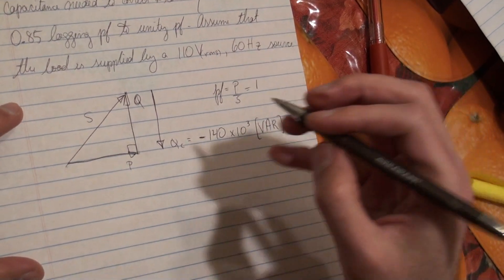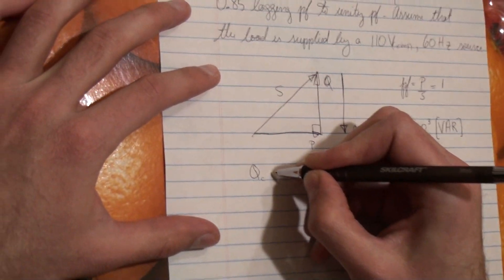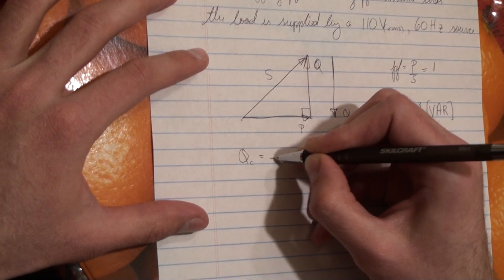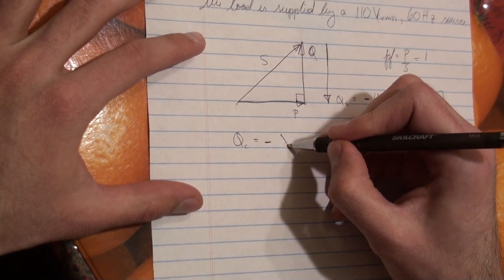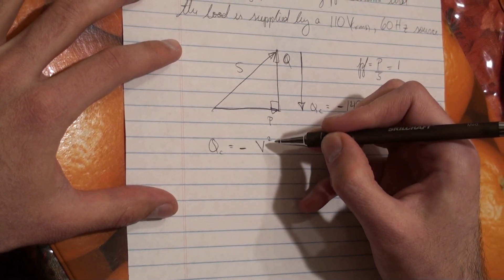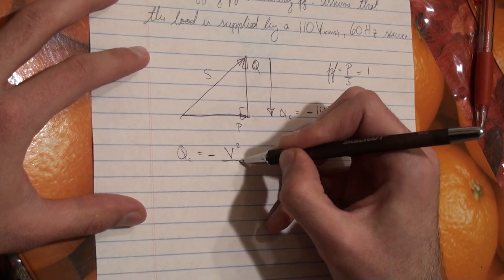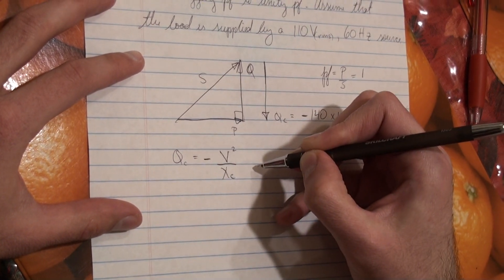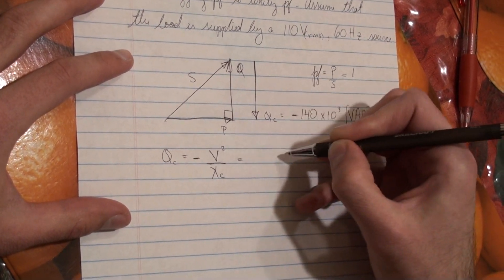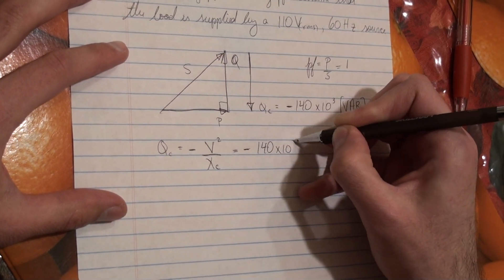So, we know we're given voltage, so we're going to use that QC is going to be minus the voltage source, the magnitude of the voltage source squared, divided by the reactance of this capacitor. And this whole thing needs to be equal to minus 140 times 10 to the 3 VAR.